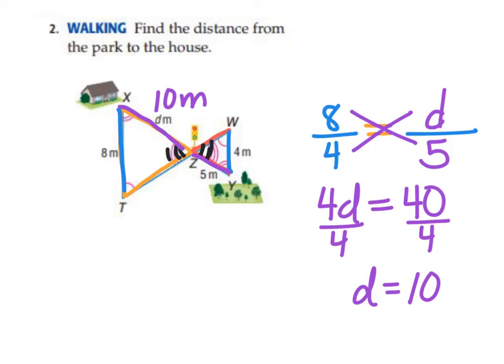So now if I actually read the question that's on here, it says, can you find the distance from the house to the park? Well, this length is 10 meters plus another 5 meters. So the total distance from the house to the park is 15 meters.